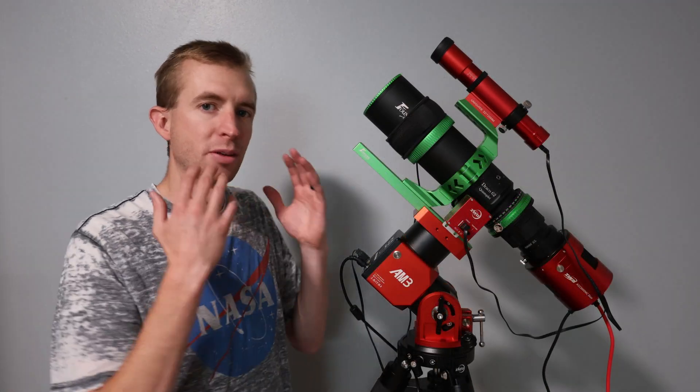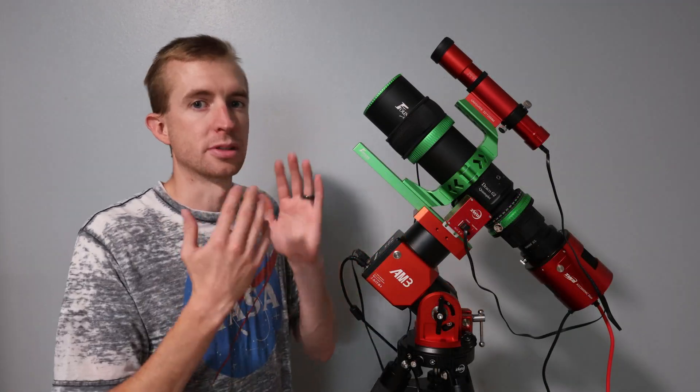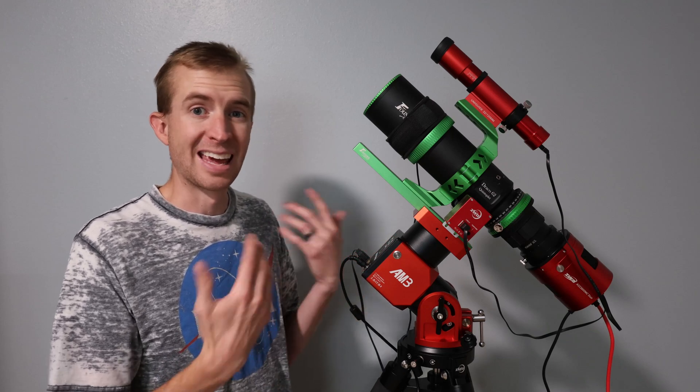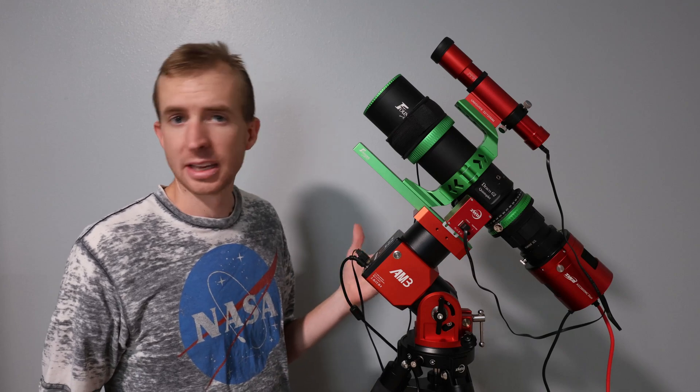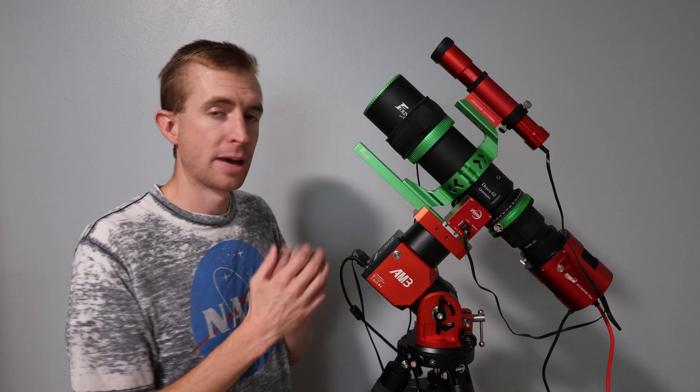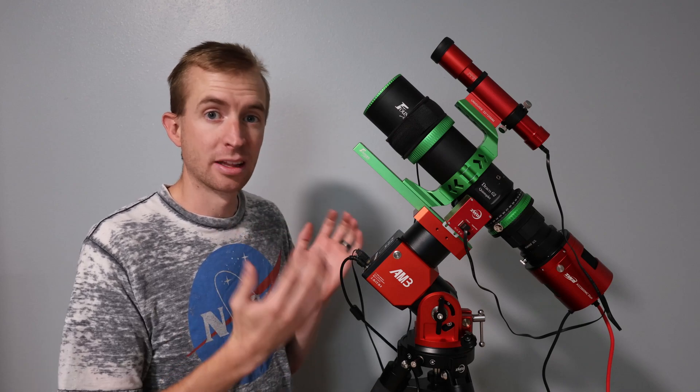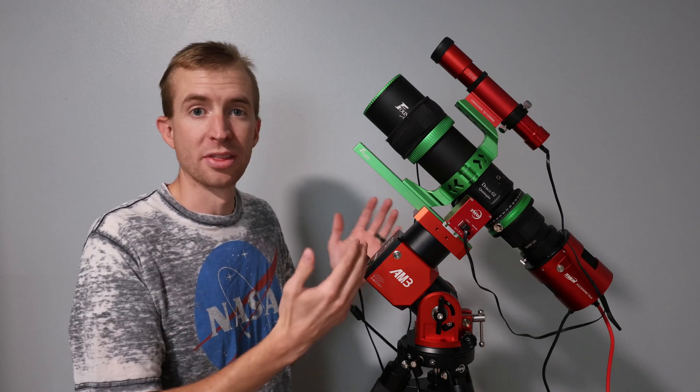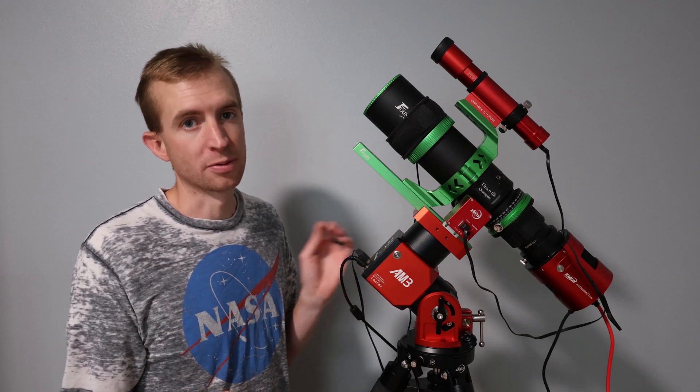I first want to talk about the weight of the AM3 compared to its load capacity. The AM3 mount only weighs 3.9 kilograms or roughly 8.5 pounds, light enough to carry it with one hand. Now if you're not using a counterweight, the load capacity of the AM3 is 8 kilograms or roughly 17.5 pounds. That's about double what the AM3 weighs. Pretty impressive performance right there.